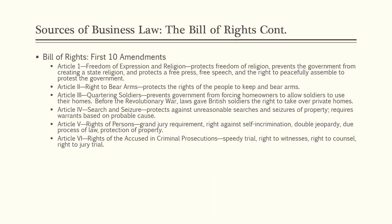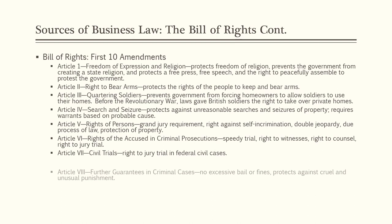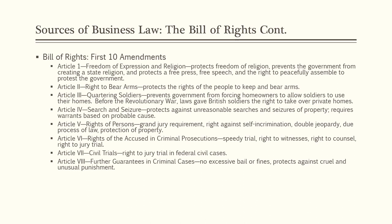The Sixth Amendment deals with more rights of the accused in criminal prosecutions: the right to a speedy trial, the right to present and confront witnesses, the right to counsel, and the right to a jury trial. The Seventh Amendment deals with civil trials and provides a right to jury trials in federal civil cases. The Eighth Amendment provides further guarantees in criminal cases — no excessive bail or fine — and protects against cruel and unusual punishment. Groups challenging the death penalty cite the Eighth Amendment's prohibition against cruel and unusual punishment.